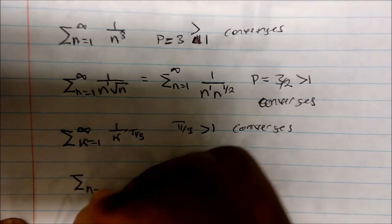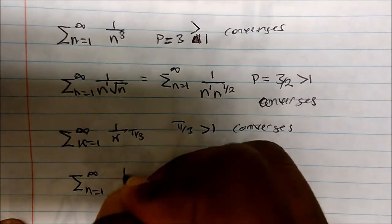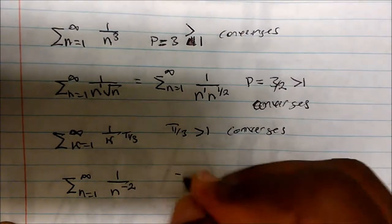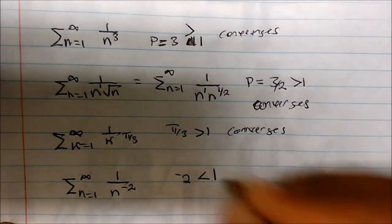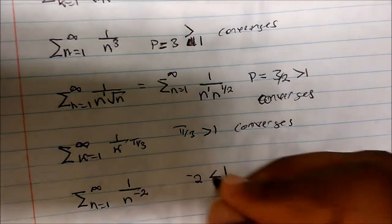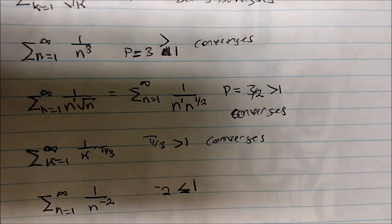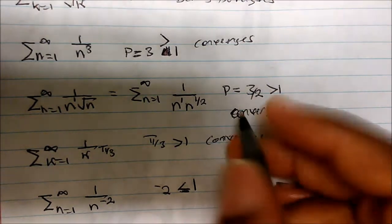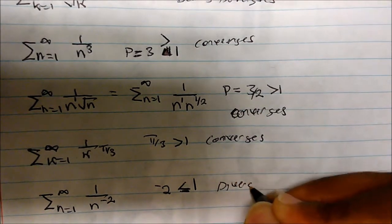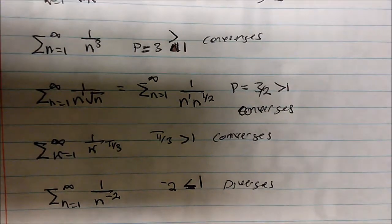What is the summation where n equals one to infinity of one over n to the negative two? In this case P equals negative two, which is less than or equal to one, so we can conclude the series actually diverges.